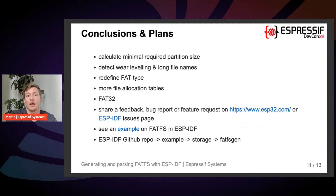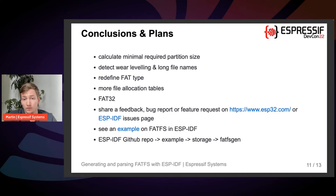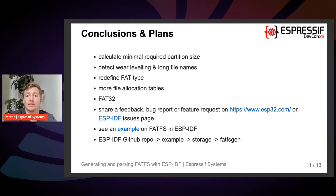To sum it up, users can now generate and parse FAT images on the host. Current restrictions are FAT12 and FAT16 with wear leveling and long file name support. The command line tool or CMake function is used to encode the local folder into the binary image. To flash the partition into the device you can use esptool. Decoding is possible only by command line tool, and extracting from the device can be done using esptool or parttool.